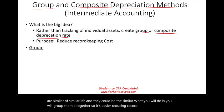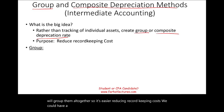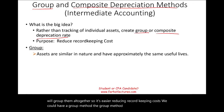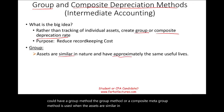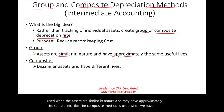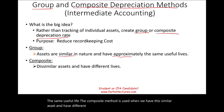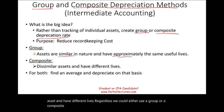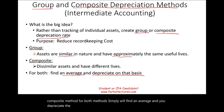We could have a group method or a composite method. The group method is used when the assets are similar in nature and have approximately the same useful life. The composite method is used when assets are dissimilar and have different lives. For both methods, you simply find an average depreciation rate and depreciate based on that average.